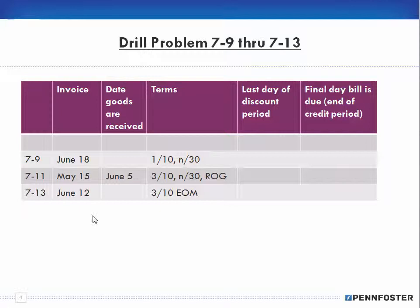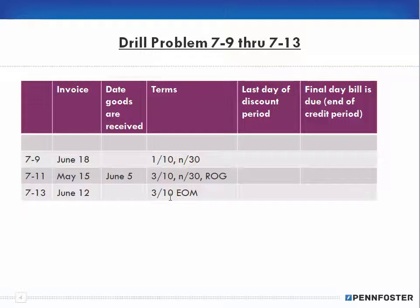These three problems deal with figuring out the number of days in the discount period and when the bill is finally due based on our terms. There's no calculation involved — we're just looking at terms: 1% 10 net 30 for ordinary dating, 3-10 net 30 for receipt of goods, and 3-10 end of month. Even though the terms are similar, the discount period differs based on the type of terms offered.